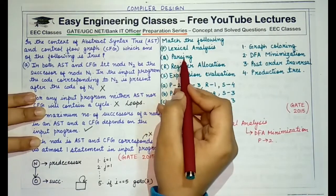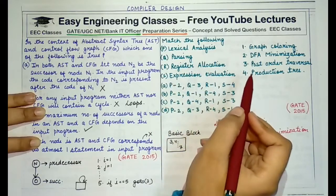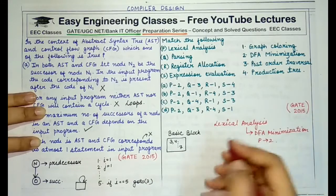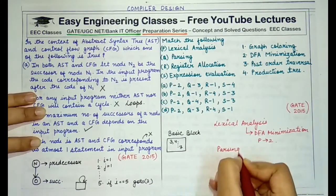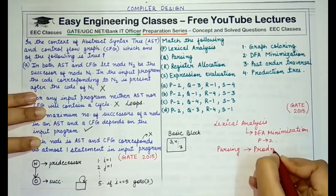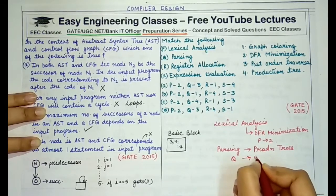Now parsing results, or it is a stage of compiling that generates the production of trees, the production trees or the parsing trees. So parser or parsing generates production trees. Therefore option Q maps to option 4.